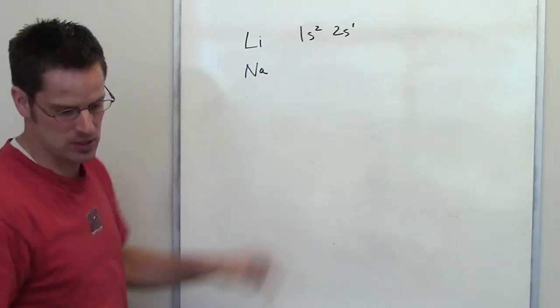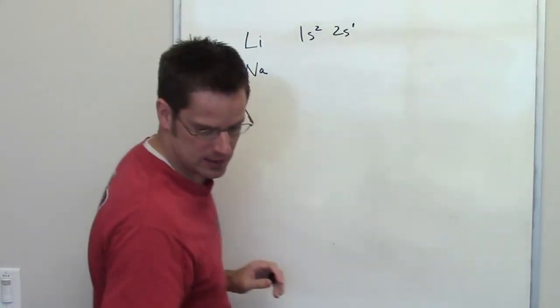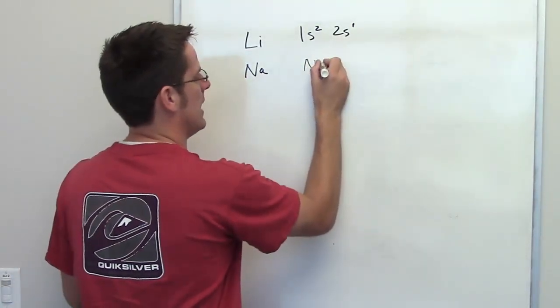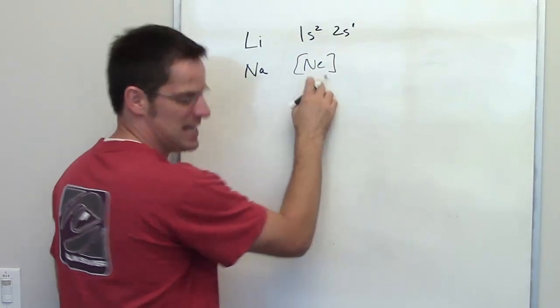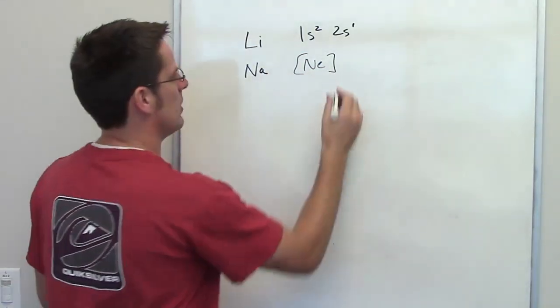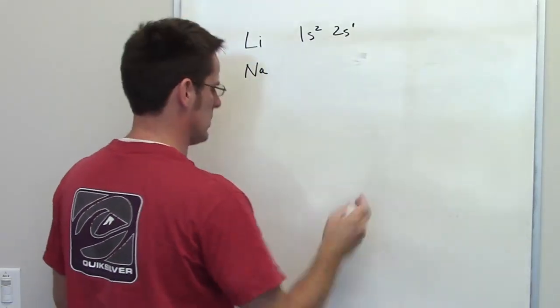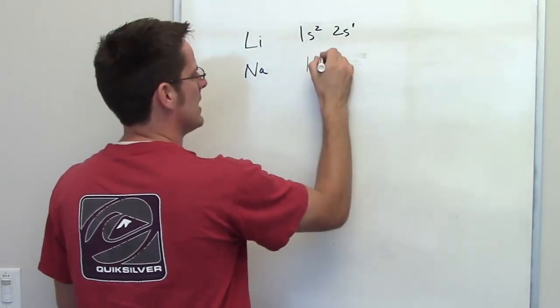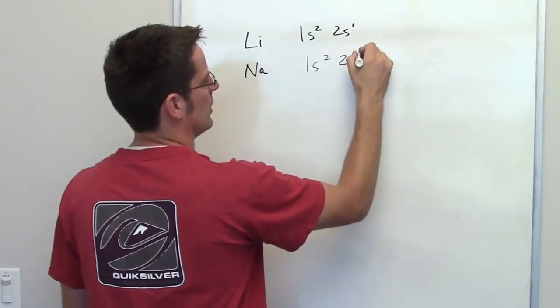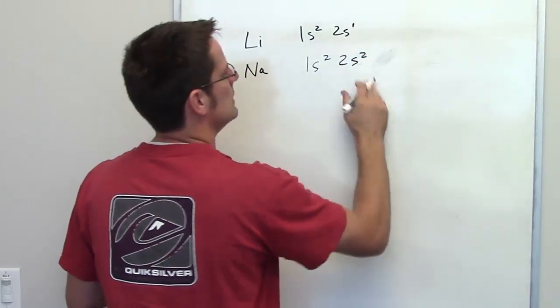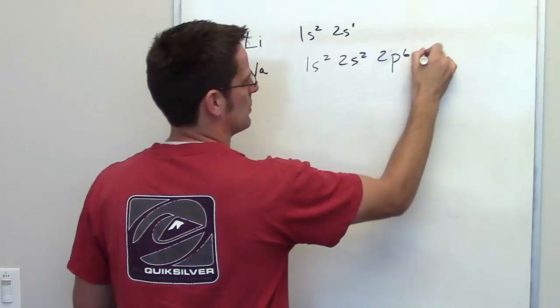By comparison, sodium has an electron configuration, in a neutral state at least, of neon, followed by 3s1. In fact, if I write that whole thing out, I'm going to go ahead and do it the longhand way. We've got 1s2, 2s2, 2p6, 3s1.